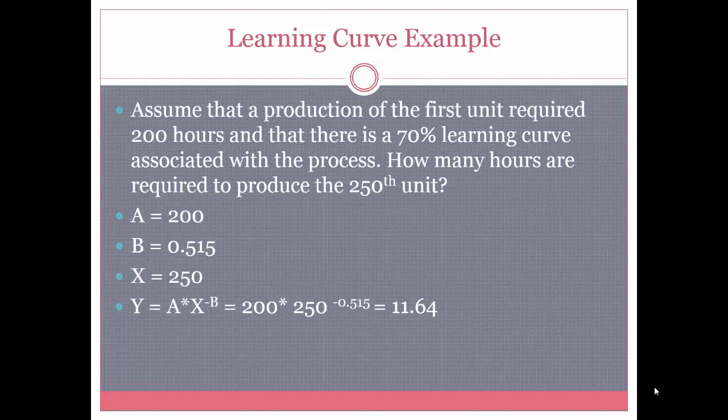The main types of learning models: first, we have the U model, which is a basic model of production time for the x-th unit. Then we have the CA model, which is the cumulative average version of the U model. It uses the same concept, however the production times are accumulated and then averaged to get an overall average of times.